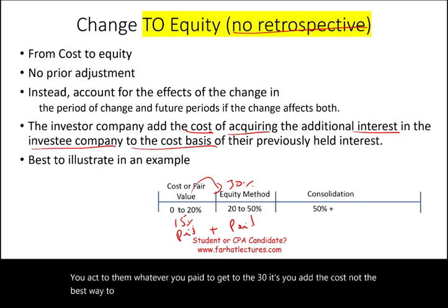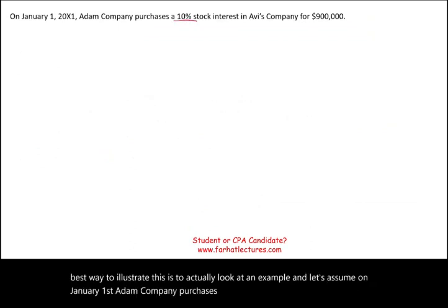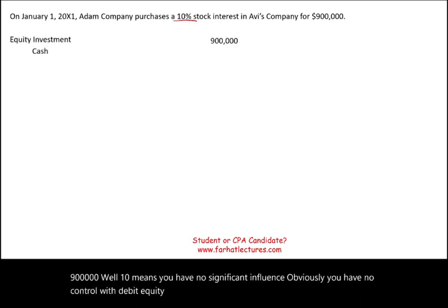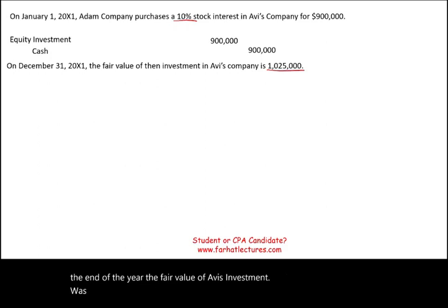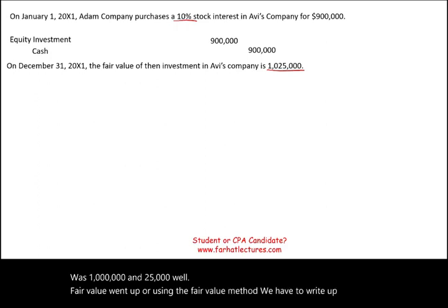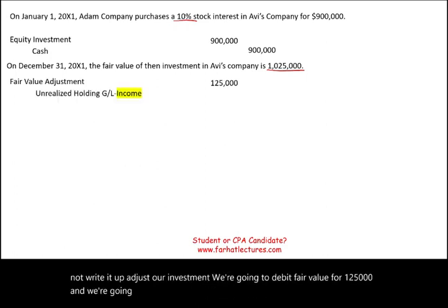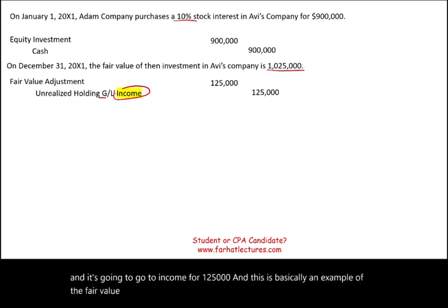The best way to illustrate this is with an example. On January 1st, Adam Company purchases a 10 percent stock interest in Avi's company for $900,000. Ten percent means no significant influence and no control. We debit equity investment $900,000 and credit cash $900,000. By end of year, the fair value of Avi's investment was $1,025,000 — fair value went up. We debit fair value for $125,000 and credit unrealized holding gain or loss — a gain going to income — for $125,000. This is the fair value method: adjusting your investment to fair value.